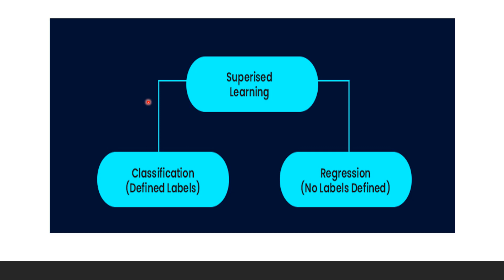The weight of every person is different — some might have a weight of 60 kg while others have 59 kg. A classification problem is when the output variable is a category, such as whether a person has a specific disease or not, whether an animal is a cat or a dog, or whether an email is spam or not. Linear regression, as the name suggests, is an algorithm used to address the regression problem.